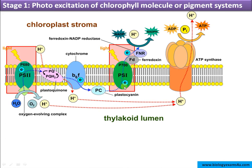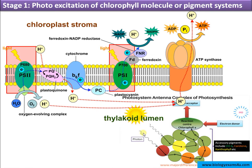This is pigment system 2 and this is pigment system 1 — a picture of non-cyclic photo phosphorylation predominant in higher plants. Photosystems are light-harvesting complexes that consist of accessory pigments and a reaction center chlorophyll molecule. Light energy is trapped by the accessory pigments and transferred to adjacent pigment molecules by resonance transfer, ultimately passed to the reaction center chlorophyll molecule, where electrons are ejected from the ground state to the excited state and received by electron acceptors.